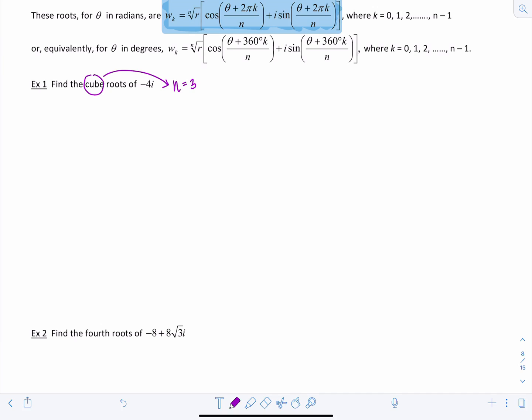My complex number z is equal to negative 4i. I need to write that in trig form first, so r is equal to 4 and theta would have to be 3 pi over 2. Right, so z equals 4 cis 3 pi over 2.